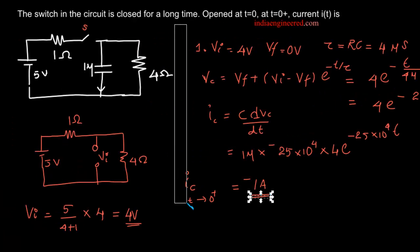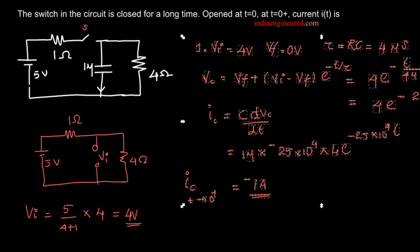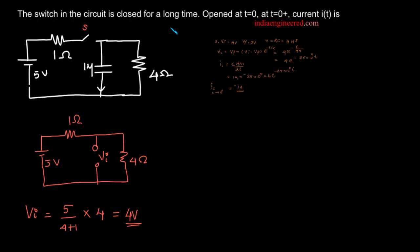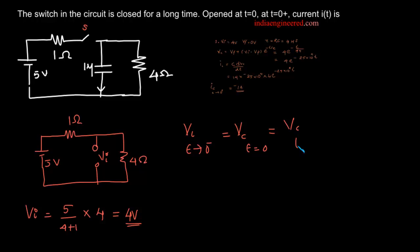Now we will see how to solve this problem in an easier manner. The switch in the circuit is closed for a long time, so the capacitor acts as an open circuit and the voltage is 4 volts, as already found. We are asked to find the current at t equal to 0 plus only. We know that the capacitor voltage doesn't change abruptly — the voltage at t equal to 0 minus is the same as at t equal to 0 and at t equal to 0 plus. So all of these are equal to 4 volts.